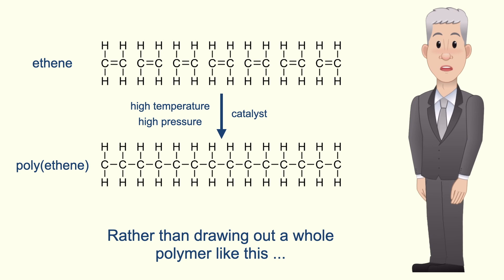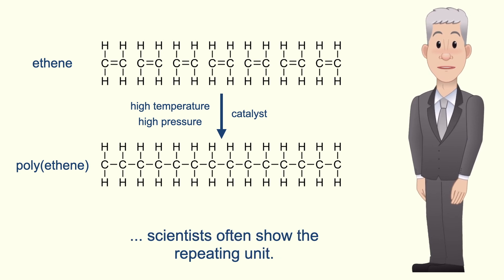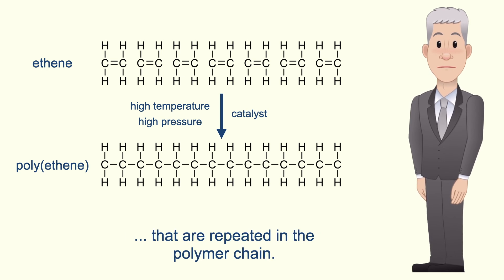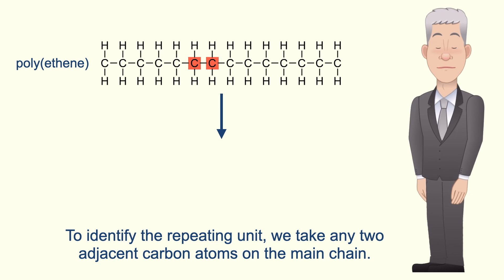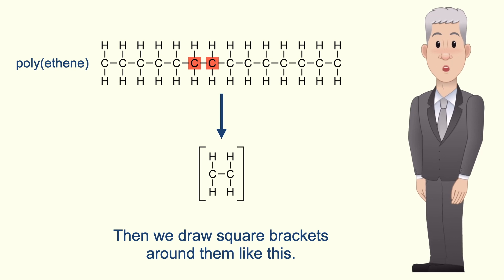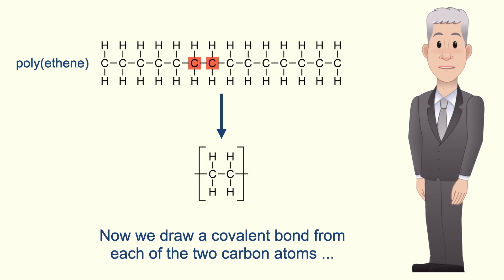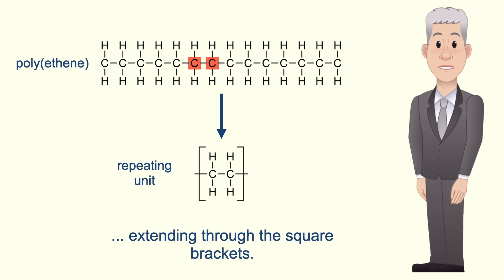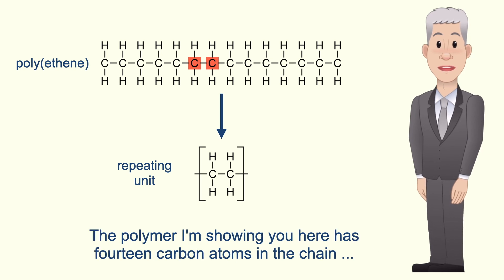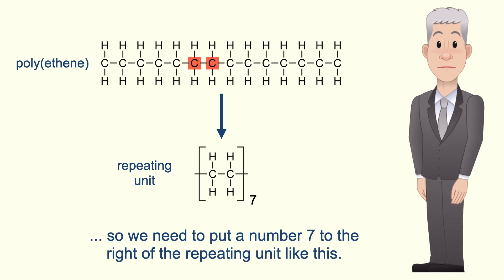Rather than drawing out a whole polymer, scientists often show the repeating unit. The repeating unit shows the arrangement of atoms that are repeated in the polymer chain. To identify the repeating unit, we take any two adjacent carbon atoms on the main chain. We then draw those two carbon atoms plus any atoms above and below, and draw square brackets around them. We draw a covalent bond from each of the two carbon atoms, extending through the square brackets. We also need to show how many repeating units are present. The polymer shown here has 14 carbon atoms in the chain, so we put a number 7 to the right of the repeating unit.